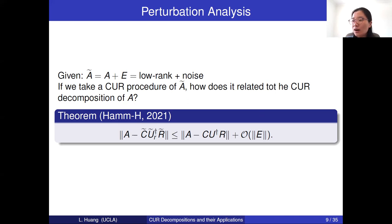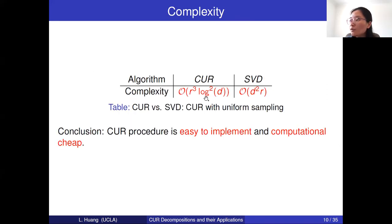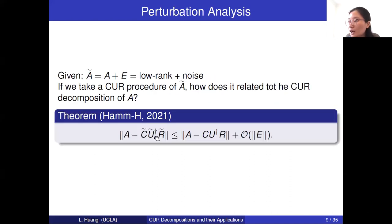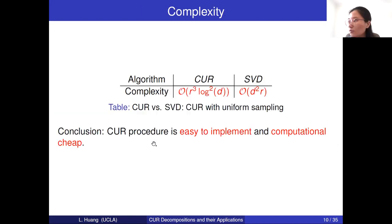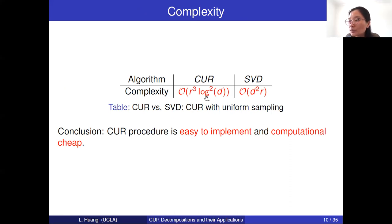Next, let's compare the complexity between the CUR decomposition and the SVD decomposition. If we choose the row and column indices uniformly, for the CUR decomposition we only need to compute the U sub-matrix inverse. If A is an incoherent matrix, then we have a U matrix of size (R log d) by (R log d), so the complexity to compute U-inverse is on the order of R-cubed times (log d)^2. But to compute the SVD decomposition for a d-by-d matrix, the complexity is d-squared times R. If d is a large number, the CUR decomposition is much cheaper than the SVD decomposition.